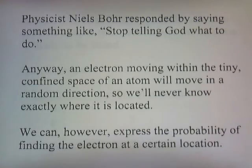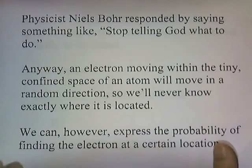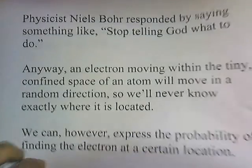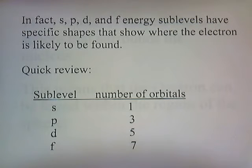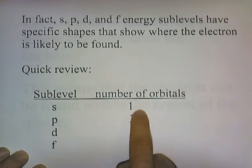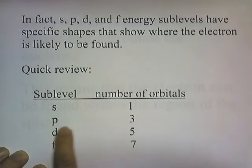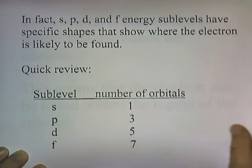We can, however, express the probability of finding the electron at a certain location. In fact, S, P, D, and F energy levels have specific shapes that show where the electron is likely to be found. Quick review: the S sublevel has one orbital, P has three orbitals, D has five, and F has seven.